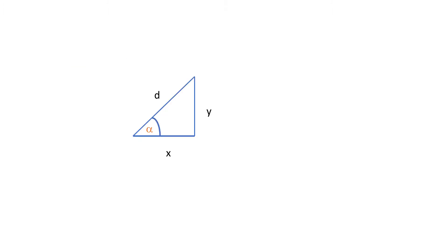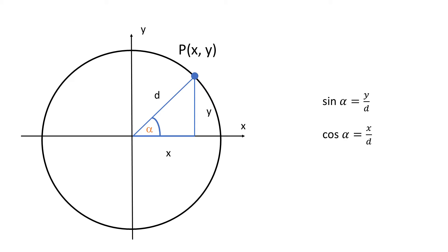Quick recap of trigonometry. If I label sides of this right triangle as follows, then sine and cosine are y over d and x over d respectively. Now let's place this triangle in a circle in the coordinate system, so that vertex p of the triangle is in the perimeter of the circle. Now you can see that this distance is x and this distance is y and the formulas hold.